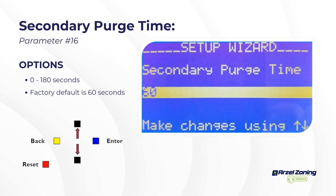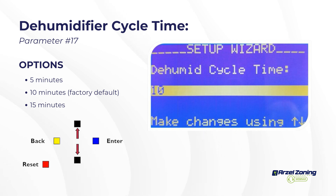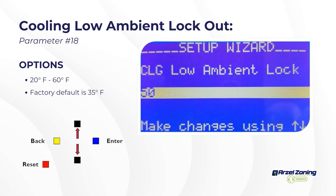Secondary purge time: the panel has two purge cycles. The primary purge holds the last calling zone's dampers open for two minutes at the end of a conditioning call. The secondary purge then de-energizes every zone solenoid and continues running the pump — typically 60 seconds — to drive all dampers fully open before shutting off. Dehumid cycle time sets how long Y1 runs on a dehumidification call: 5, 10, or 15 minutes. Longer runtime removes more humidity but increases the risk of over-cooling.